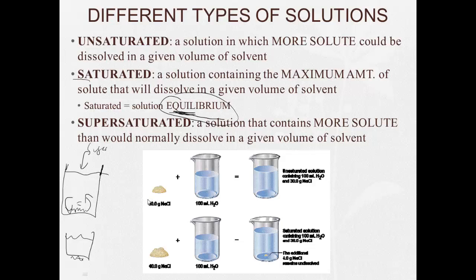So if we take 30 grams salt, dissolve it in water, we're going to have an unsaturated solution. We can see all the salt is dissolved. Add 40 grams of salt into 100 milliliters of water, we have a saturated solution, but extra salt sitting at the bottom. And that extra salt is the portion that just didn't dissolve.